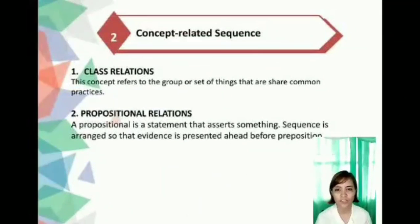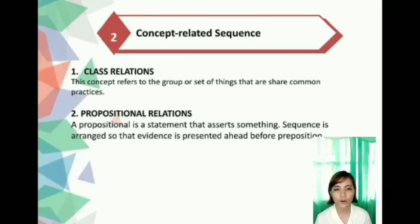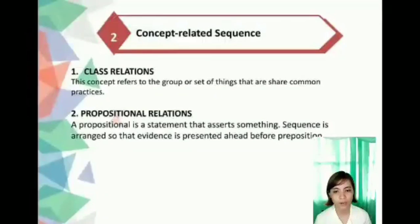The next major principle is concept-related sequence. This arrangement refers to the organization of the conceptual world — how ideas are related together in a logical manner. The first subtype is class relation: a class concept refers to a group or set of things that share common properties. For example, the teacher teaches mammals before teaching specific animals. The next subtype is propositional relation. A proposition is a statement that asserts something, and the sequence is arranged so that evidence is presented before the proposition.